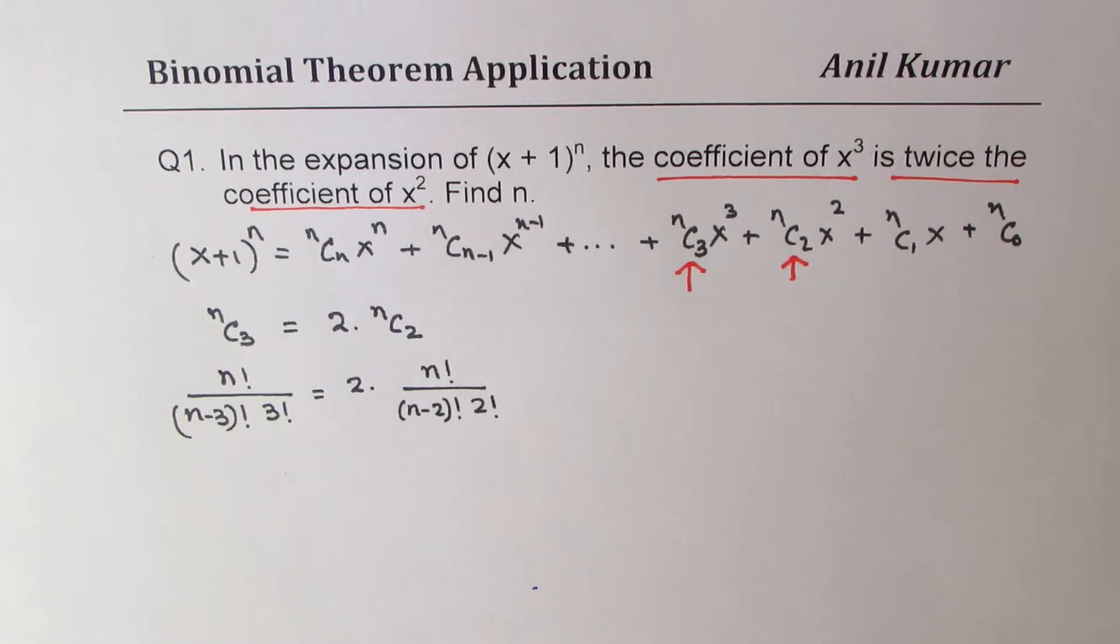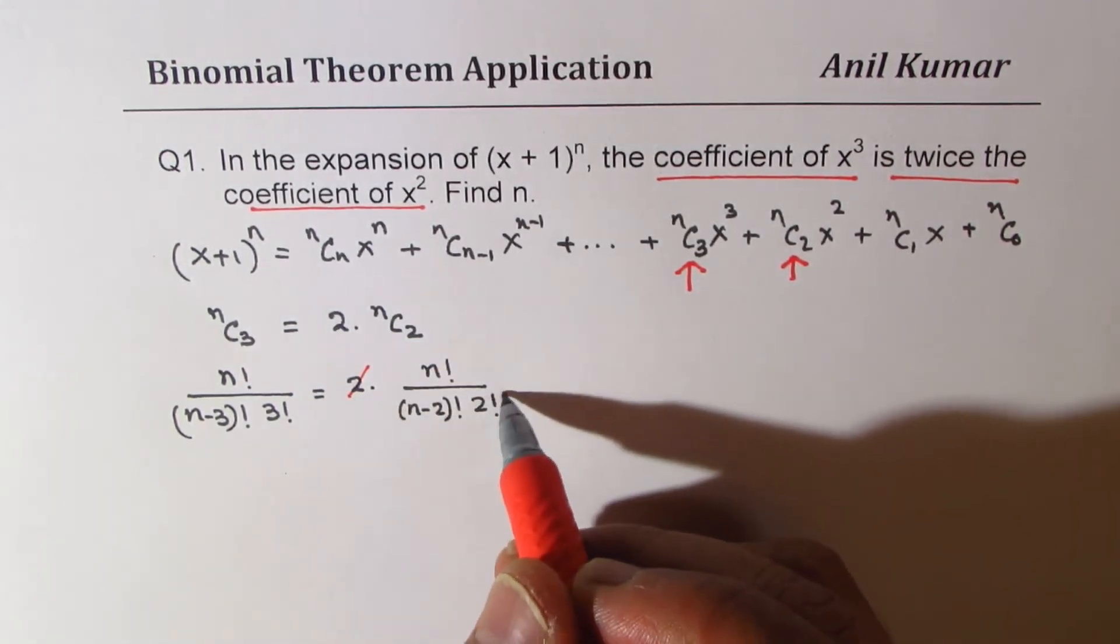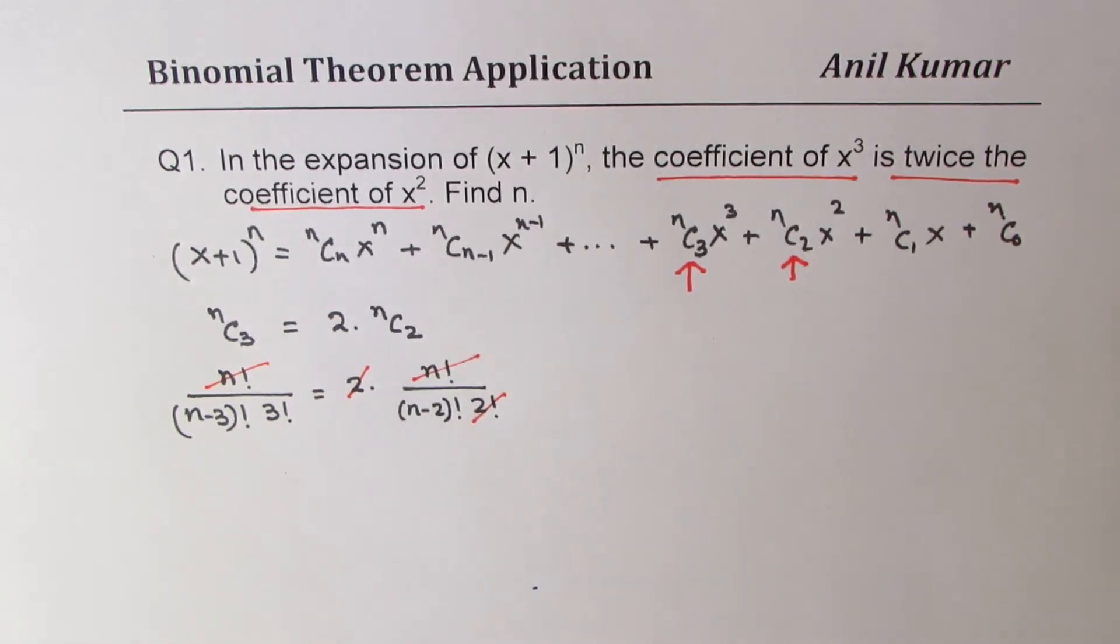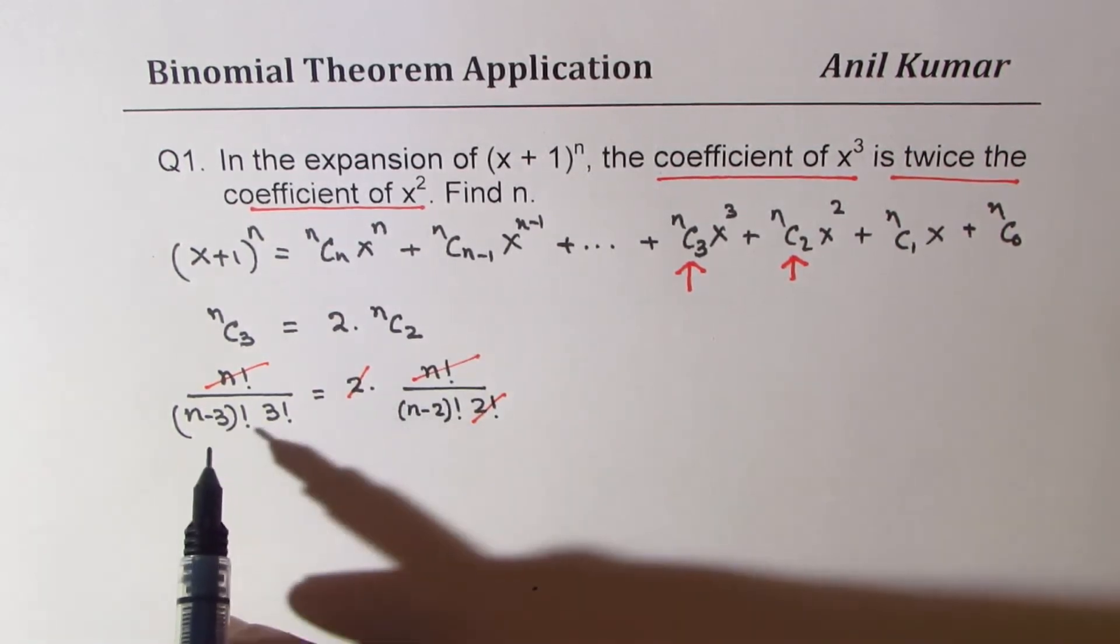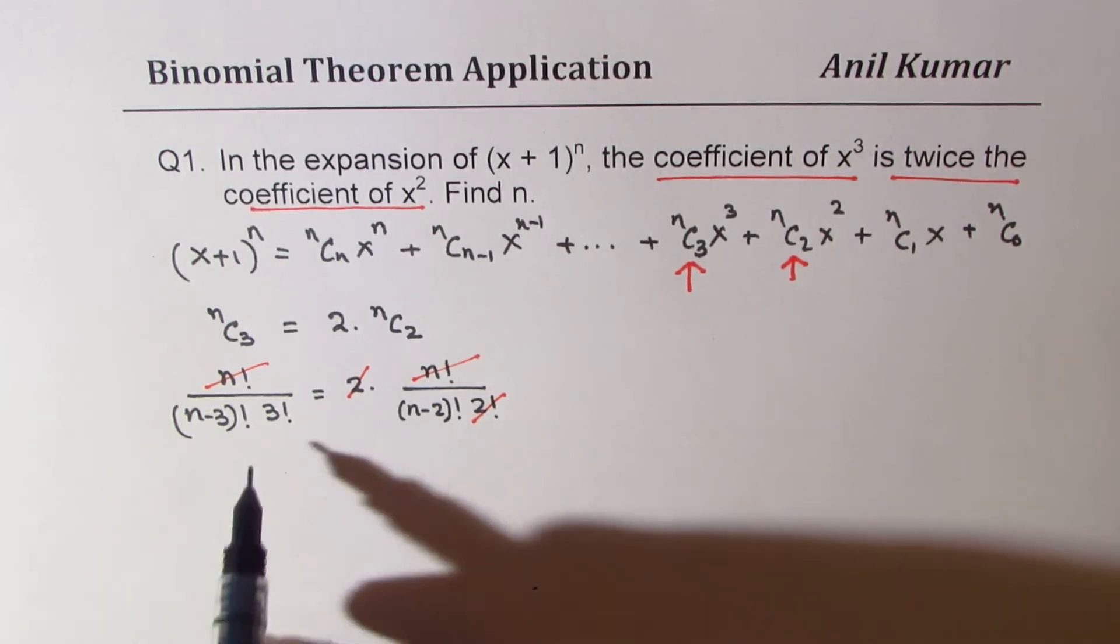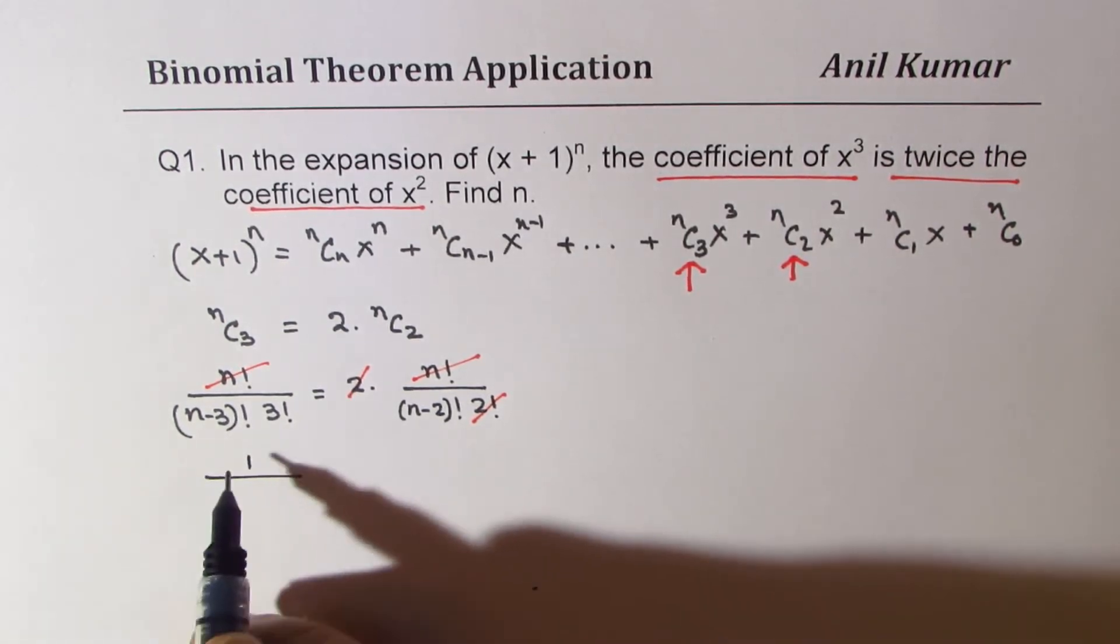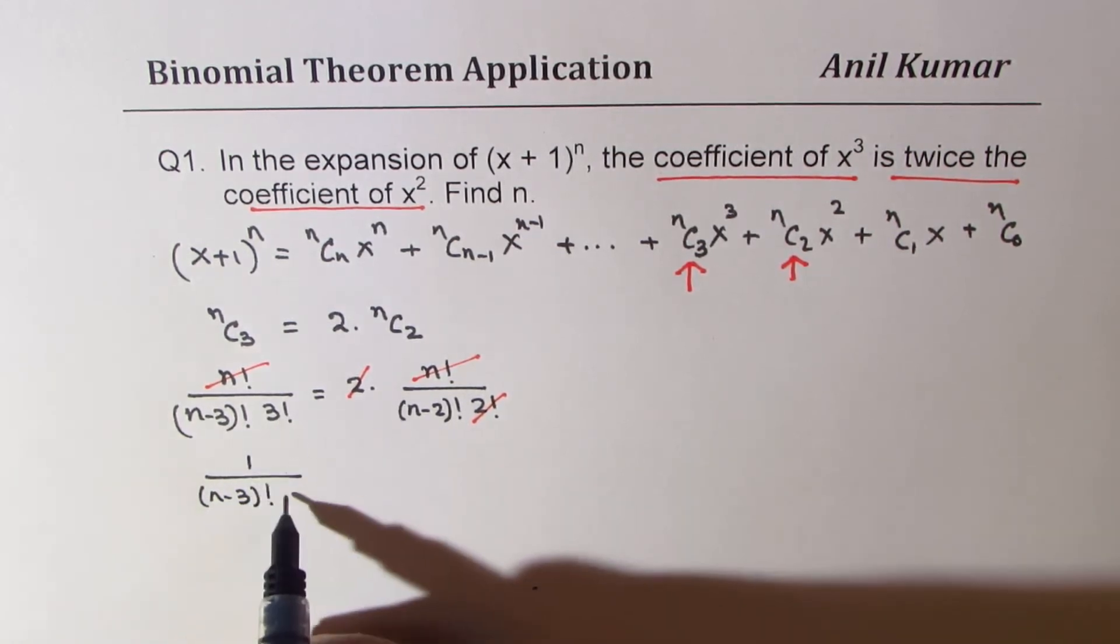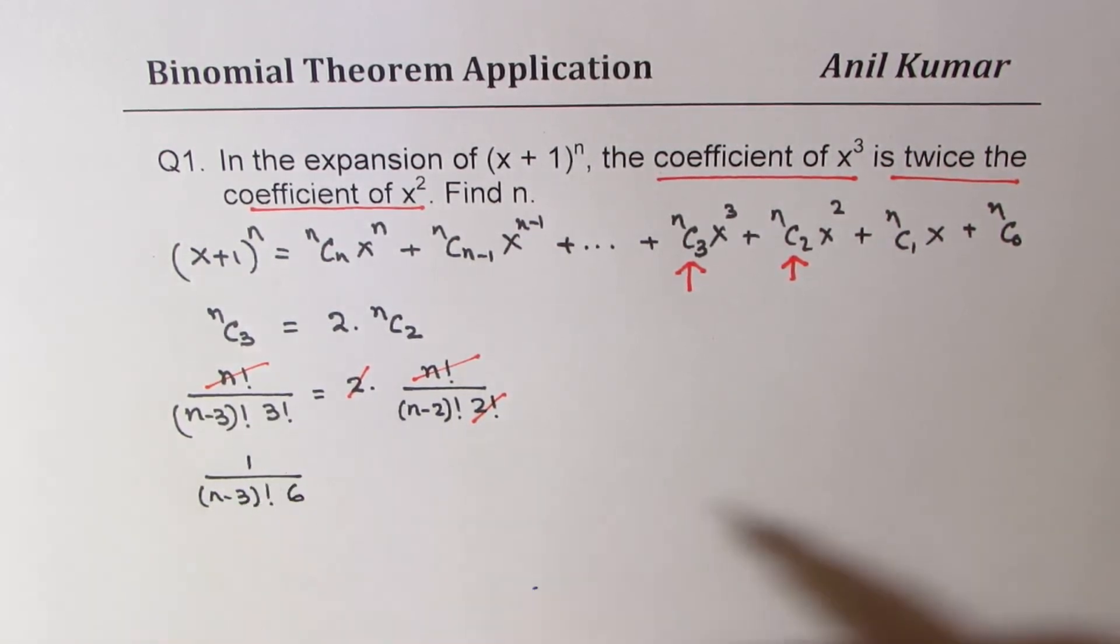Now, we can simplify this. We can cancel 2 with 2 factorial, we can cancel n factorial, and simplify the rest. Writing this, we get 1 / [(n-3)! × 6], right? 3 times 2.